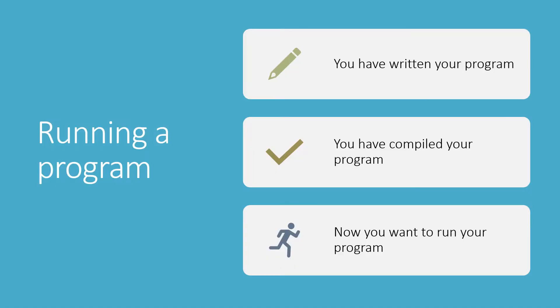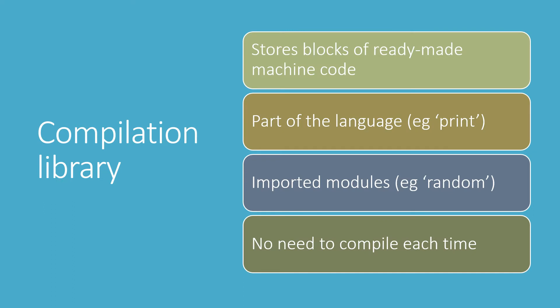So remember, you've written a program, you've compiled it — that means you've ended up with an executable file of machine code instructions. Most high-level languages have a compilation library which you'll get alongside when you download the language or the compiler, and that will be a lot of blocks of ready-made machine code that can be added to your executable file. Sometimes that's for standard instructions that are part of the language, such as print, so all the instructions about accessing the output device such as the screen and sending the result to that will be ready built in.